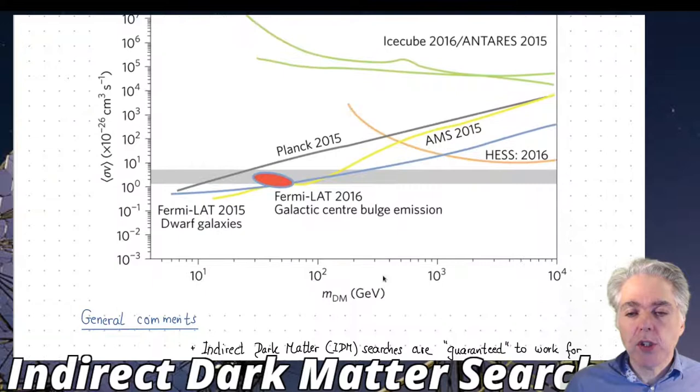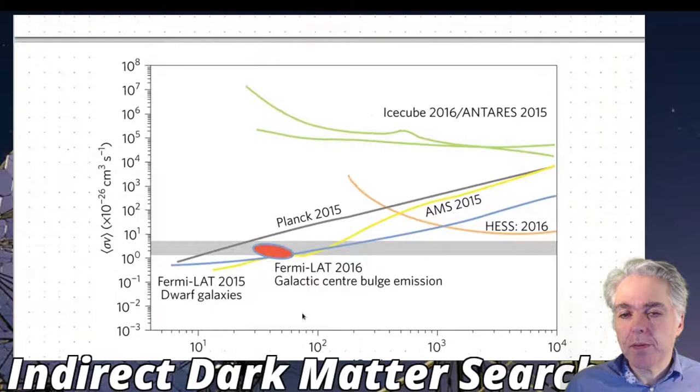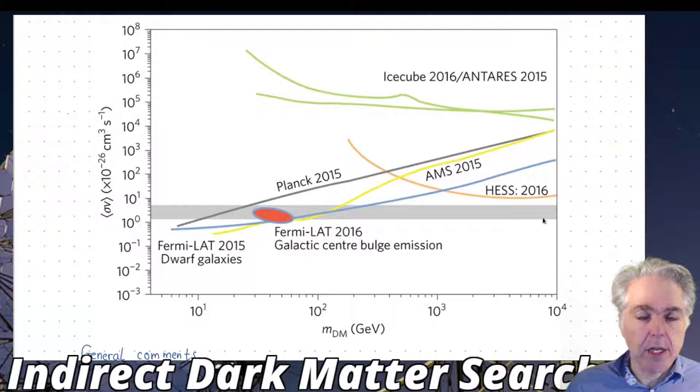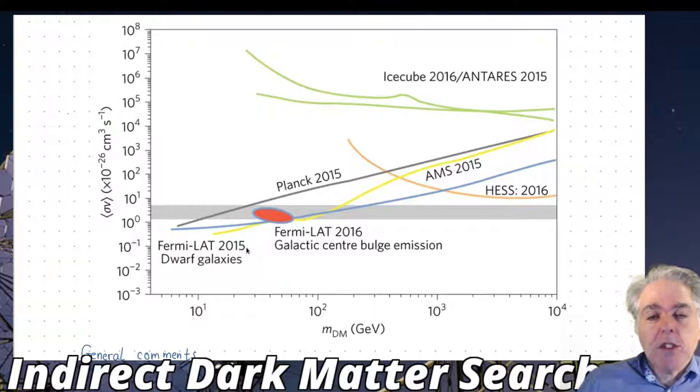To cut the story short there's a few observations summarized in this plot. This reports the cross-section sigma v in units of 10^-26 cm^3/s, and on the x-axis we have the dark matter mass. The annihilation cross-section that we expect to match the relic density is this gray band here. This would include all the uncertainties. This is really well defined.